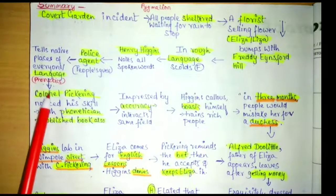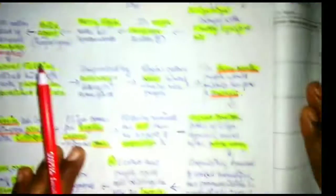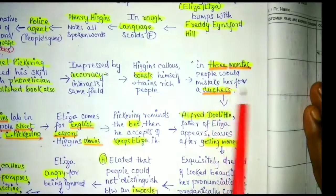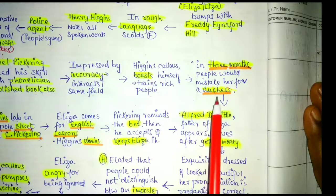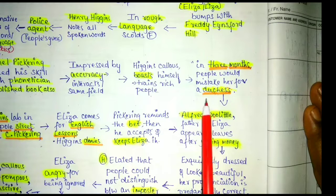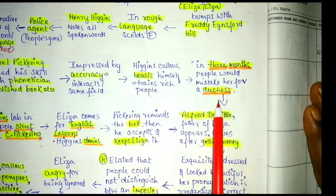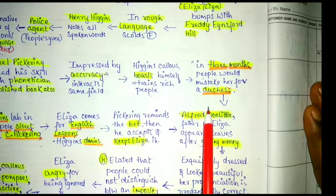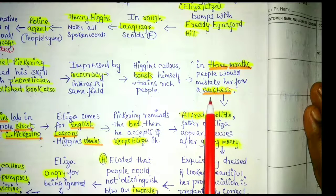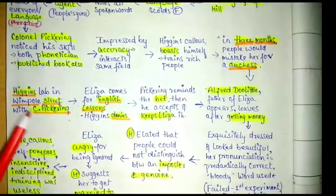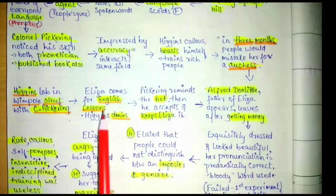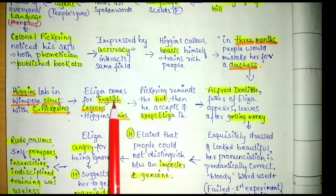Eliza had been there at the incident where people were told their location based on phonetics, and she had heard Higgins say that within three months people would mistake her for a duchess. That was a period when people were given great importance based on language and dress. She wanted to be the center of attraction and do away with her present identity.